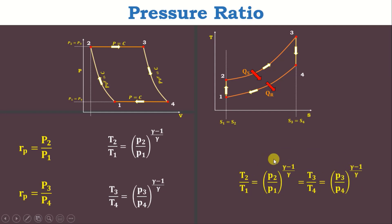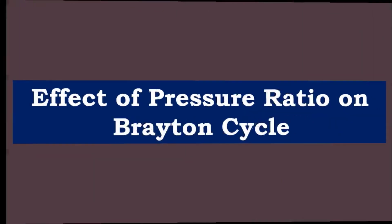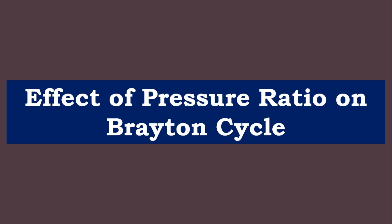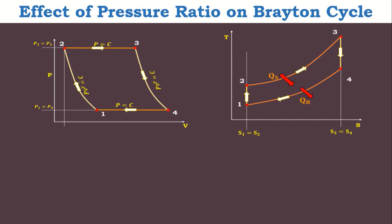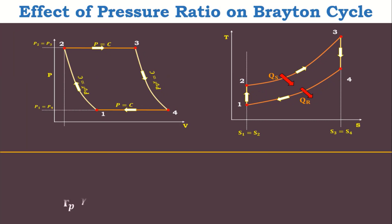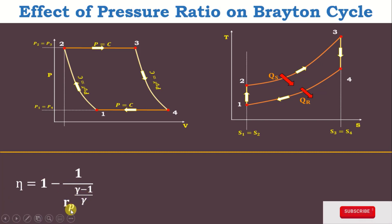This equation will be helpful to find out the maximum pressure ratio. Next, we will discuss the effect of pressure ratio on Brayton cycle. The efficiency expression of Brayton cycle is: η = 1 minus 1 divided by Rp raised to the power (gamma minus 1) divided by gamma. From this we can say that the efficiency of Brayton cycle depends on only two variables: pressure ratio and gas index.